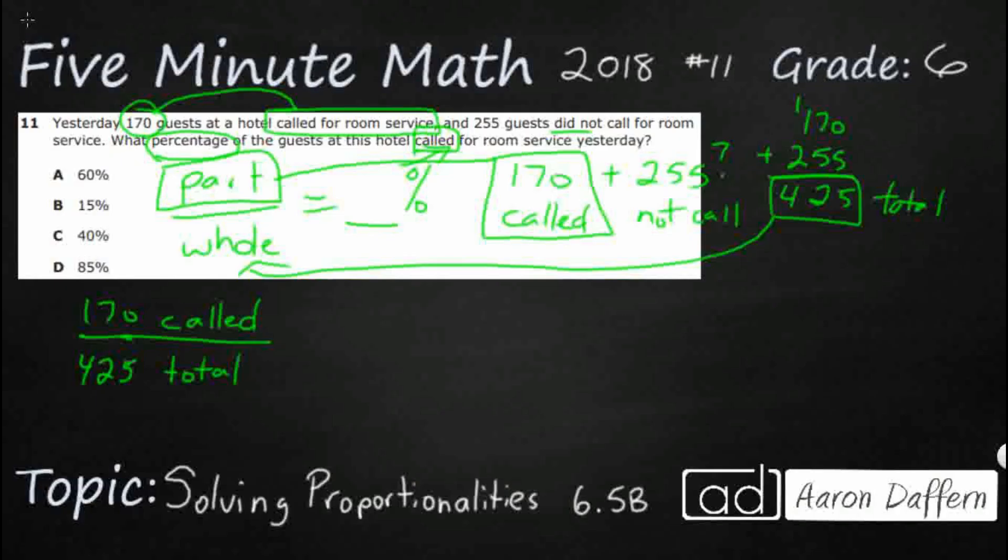So what I can say is I could say 170 called out of 425 total. Now that gives me a really good fraction and it's going to be pretty simple to go from that into a percent. It's a two step process. So first we need to change to a decimal. So we're going to divide up.